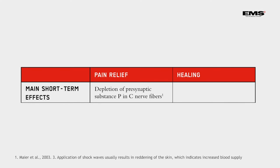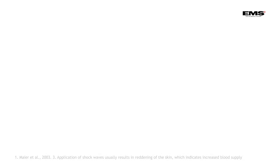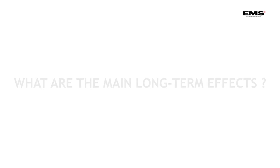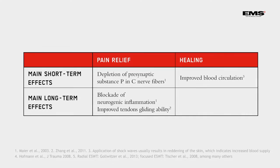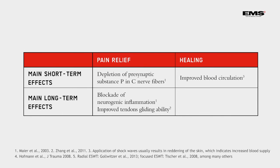The mechanisms of action include: depletion of presynaptic substance P in C fibers, improved blood circulation, blockage of neurogenic inflammation, improved tendon gliding ability, and activation of mesenchymal stem cells.